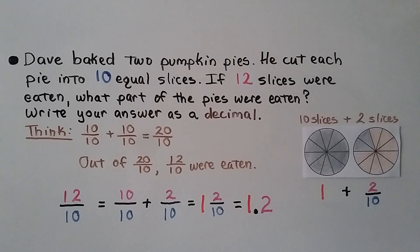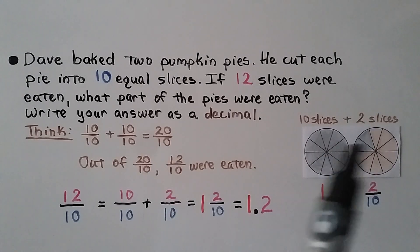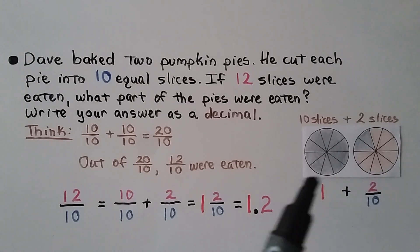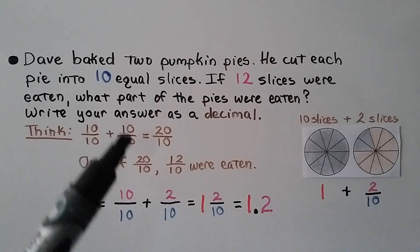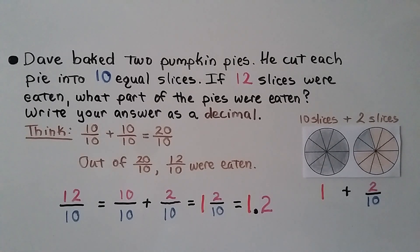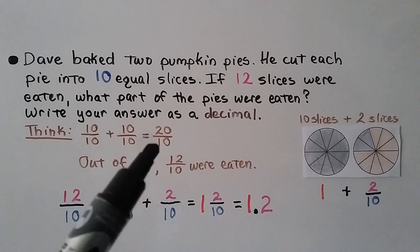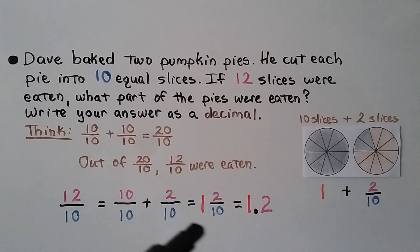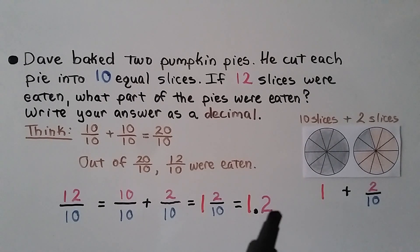Dave baked two pumpkin pies. He cut each pie into ten equal slices. If twelve slices were eaten, what part of the pies were eaten? Write the answer as a decimal. Each pie is ten-tenths, so both pies together are twenty-tenths. Twelve of those twenty tenths were eaten, so twelve-tenths were eaten. Twelve-tenths equals ten-tenths plus two-tenths, which is one and two-tenths. As a decimal, we put a one in the ones place, a decimal point, and a two in the tenths place: 1.2.